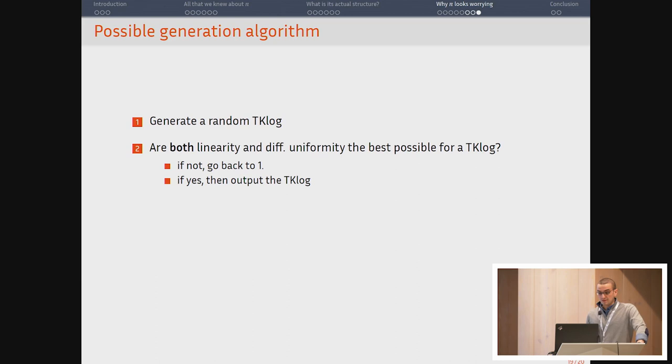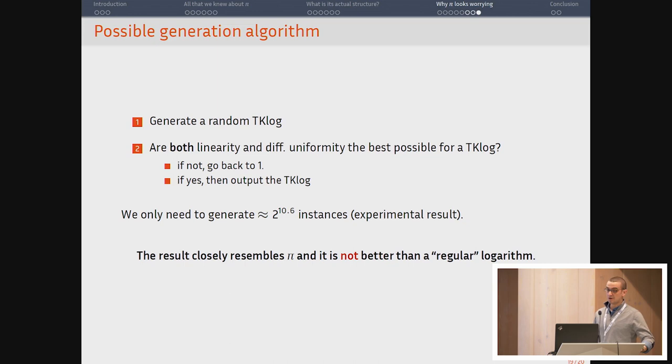That's why I claim that the presence of this structure was deliberate. And that's what the designers actually intended. If you want to design an S-box with properties that are really similar to pi, the generation algorithm is very simple. You just pick a TK log at random. You check if its linearity and differential uniformity are the best possible for a TK log. If it's the case, then you output it and you're happy. If not, you generate another. It finishes pretty quickly. You just need to generate about 2^11 random TK logs and you will find one.